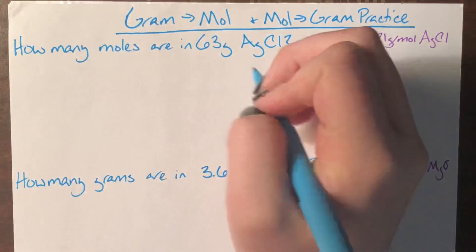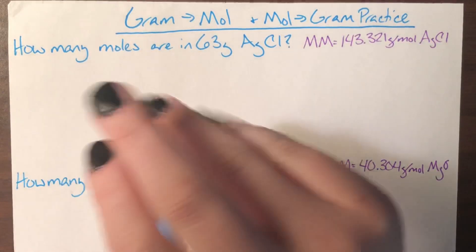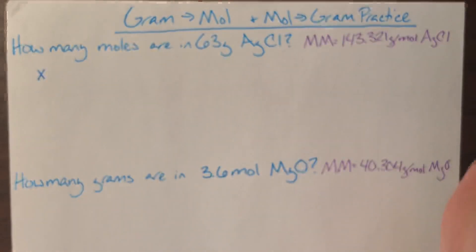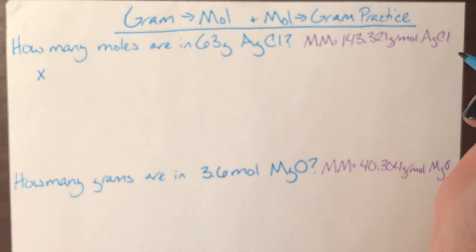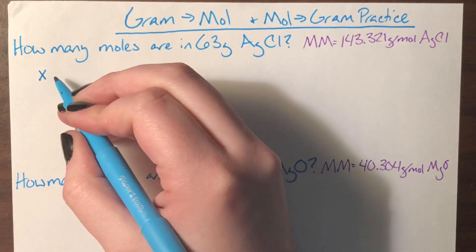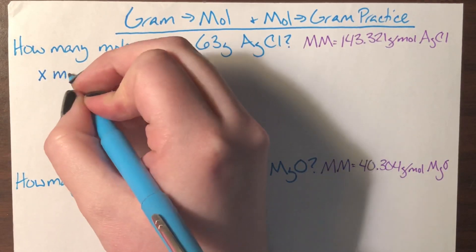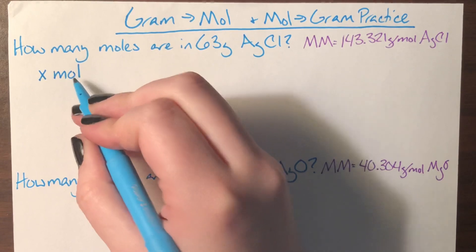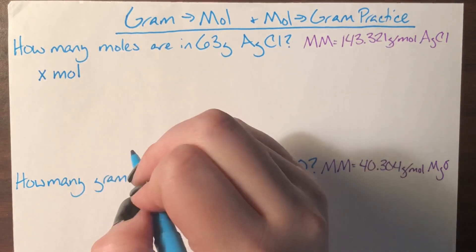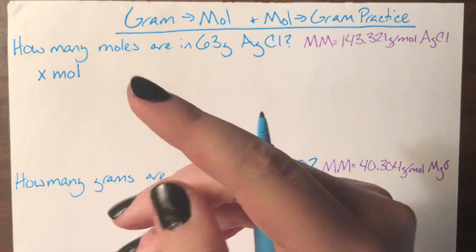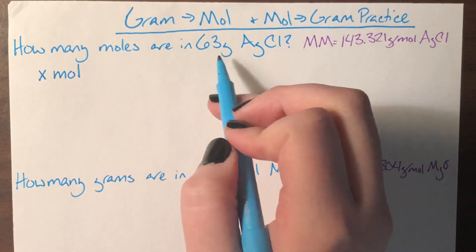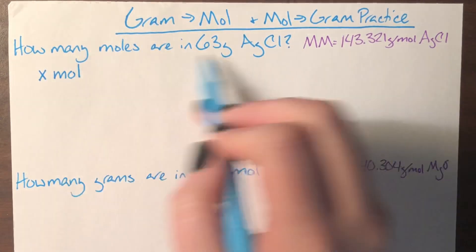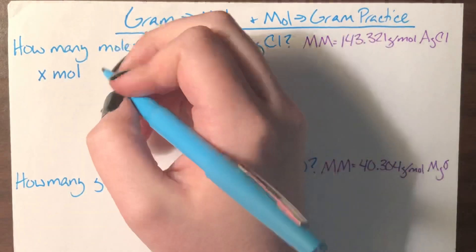We're going to start by translating this English sentence into a math sentence. Remember our question word, 'how many,' gets turned into an x, and then the unit attached to the question word is rewritten. So 'how many moles' becomes x moles, and then we need to specify what kind of moles. When we read the question — how many moles are in 63 grams silver chloride, AgCl — the only compound mentioned at all is AgCl.